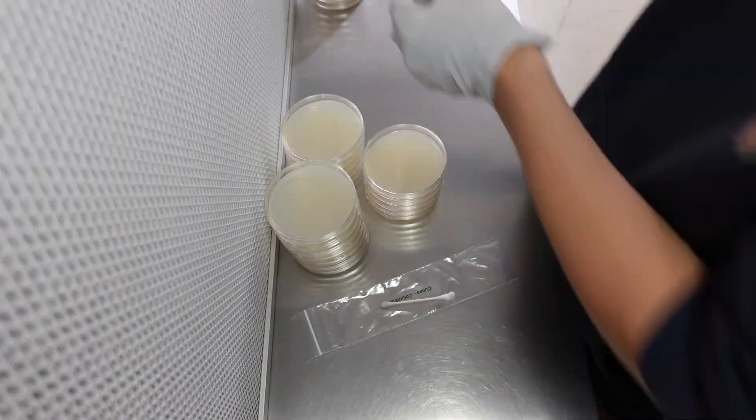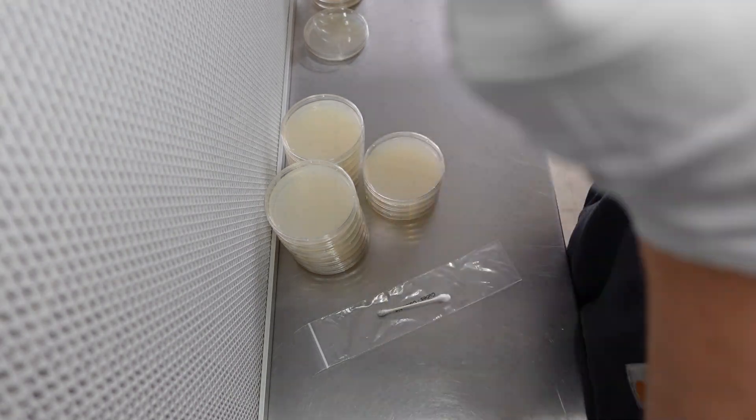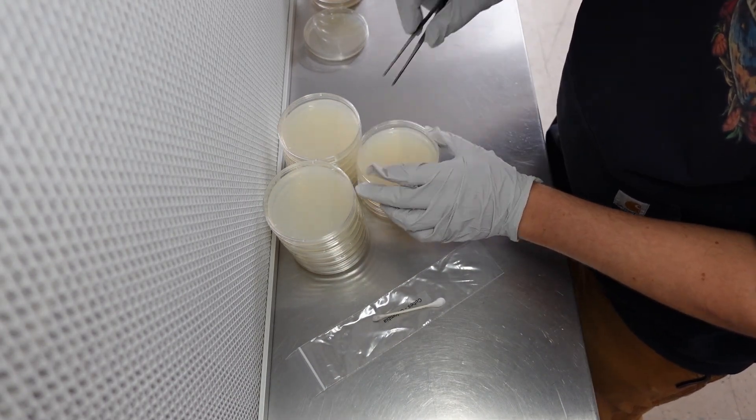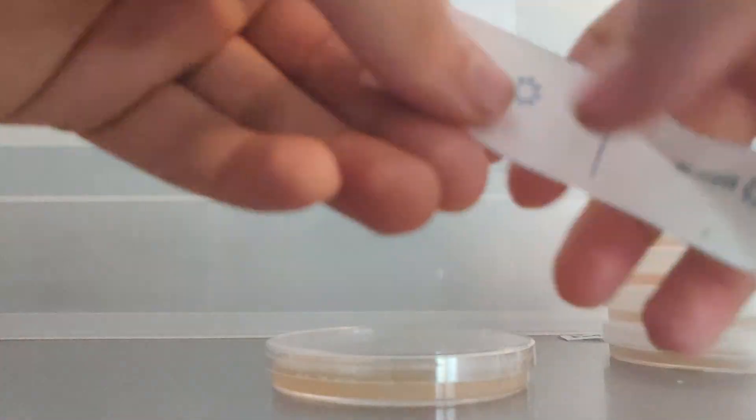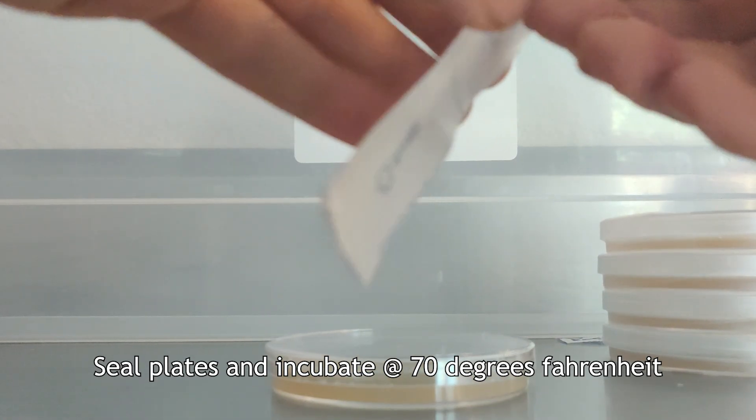If you are using a spore syringe, carefully place one to two drops of solution on each agar plate. After your plates are inoculated, seal them with parafilm or store them in clean plastic bags for incubation.